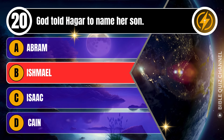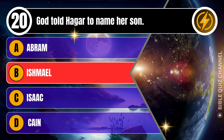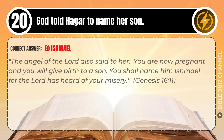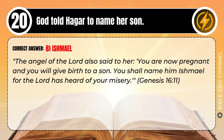Correct answer: B. Ishmael. Explaining the Bible — The angel of the Lord also said to her, 'You are now pregnant and you will give birth to a son. You shall name him Ishmael, for the Lord has heard of your misery.' Genesis, chapter 16, verse 11.